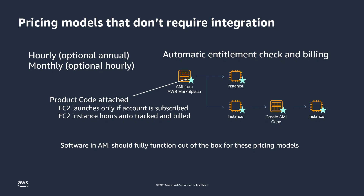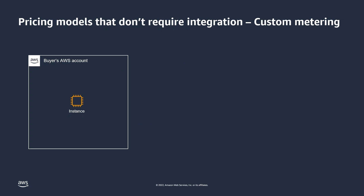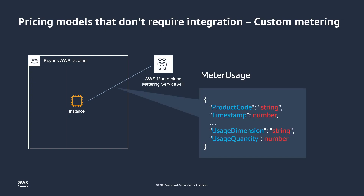To use the hourly or monthly pricing models, your AMI software must be fully functional out of the box and not require that buyers purchase additional licenses. The custom metering pricing model does require integration. Once a buyer launches an EC2 instance from your AMI, the software in your AMI sends an hourly Meter Usage API call that communicates the quantities consumed for the dimensions being tracked to the AWS Marketplace Metering Service, which then tabulates the cost.